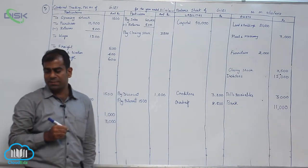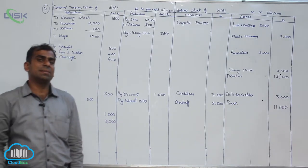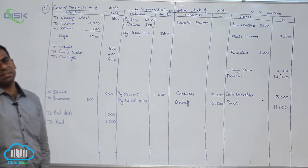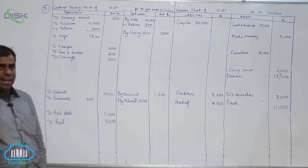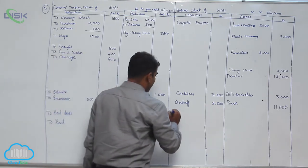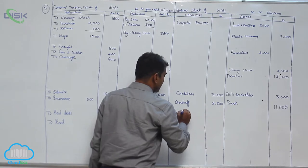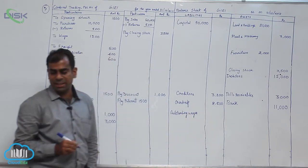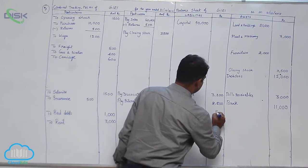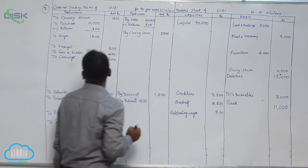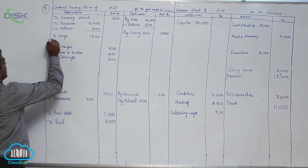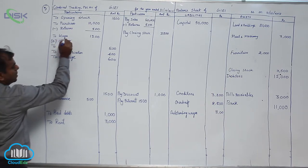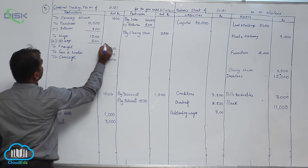The next item is outstanding wages. It is an adjustment of expenses, specifically outstanding expenses. If you refer to the table, outstanding wages becomes a personal account, so it is a credit item. In balance sheet liability you will write outstanding wages, the amount being rupees 800. We should also add it to wages because the journal entry is wages to outstanding wages. I am adding rupees 800 to wages, making it 2000.